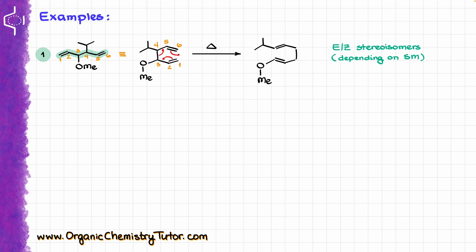One other thing I want to mention is that we are going to be seeing E and Z stereoisomers in these molecules. However, the exact stereodescriptors we are going to get do depend on the stereochemistry of the original molecule. While the stereochemistry of this particular reaction goes beyond the scope of this video, I will talk about that at some point in the future. In my experience, most instructors do not care about the stereochemistry of these reactions within the scope of introductory organic chemistry. However, if you look at it in a more advanced class, you are definitely going to be talking about the stereochemistry of all types of pericyclic reactions.